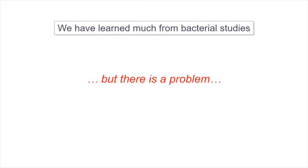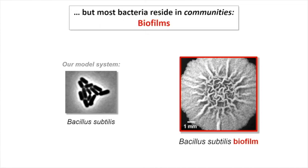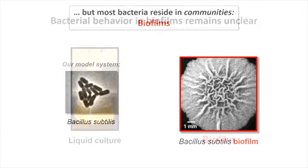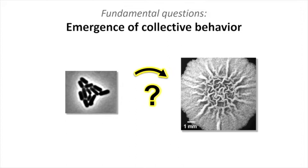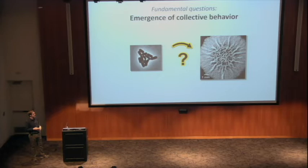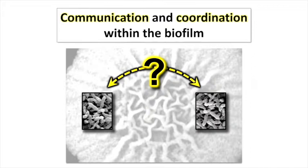Despite all this success studying bacteria, there's one challenge to the way we often study these single-celled organisms. In the lab, we study Bacillus subtilis — a model soil bacteria. While these bacteria are clearly single-celled organisms, in nature they often reside in multicellular communities known as biofilms. By only studying bacteria in well-mixed, rich laboratory environments, we're missing out on biology and behavior that goes on in these more natural multicellular contexts. Today I'll tell you about how interactions among bacteria can create higher-order structures and functions in biofilms.